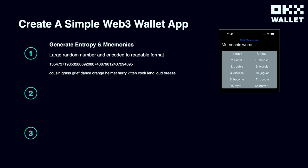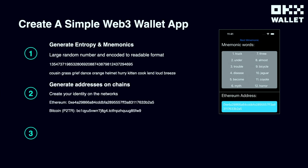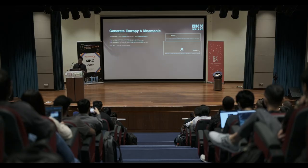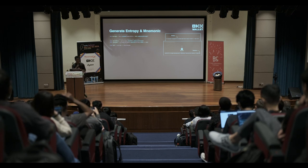Now let's together create a simple Web3 wallet app. To create a Web3 wallet app, first we need to help the user generate their private key. To generate the private key, we need to generate two things: first is entropy — a very long random number that's very hard to remember — which is why we encode it into a readable format called a mnemonic. Secondly, we use the private key from the first step to generate addresses on the chain, which is your identity. Then we read wallet assets on the chain.